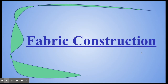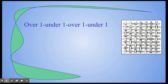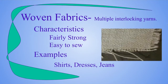Next, we're going to talk about fabric construction — this is where we take our spun fibers that are yarns and actually turn them into fabric. One of our first types of fabric is called woven fabric. It's when we take our yarn and interlock it back and forth — multiple yarns going up and down and multiple yarns going back and forth. Characteristics of woven fabric: it's very strong and easy to sew, and it's not going to stretch or slide around too much underneath the sewing machine. Examples would be buttoned-up shirts, dresses, and jeans.